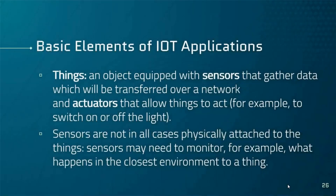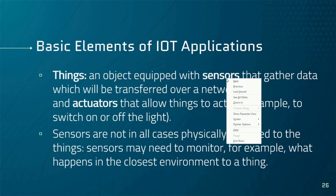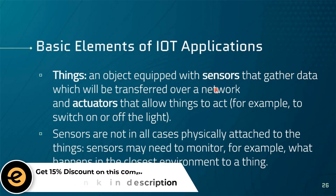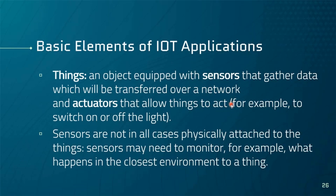The first element is the actual things — actual objects. In our case, these are microcontrollers connected to sensors and actuators. The things are connectable objects equipped with sensors that gather data, which will be transferred over a network, and actuators that allow the things to act. For example, a sensor can measure temperature, and an actuator can switch a light on and off.